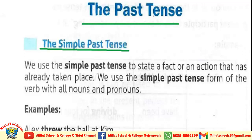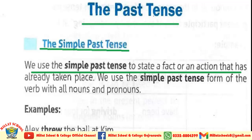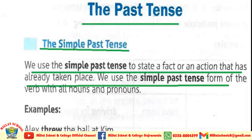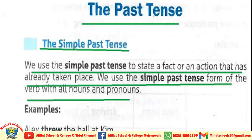Past Indefinite Tense shows the routine of some action in the past. We use the simple past tense to state a fact or an action that has already taken place. We use the second form of the verb with all nouns and pronouns. It means after the subject we add the second form of the verb. Let's have a look at the structure and some examples.